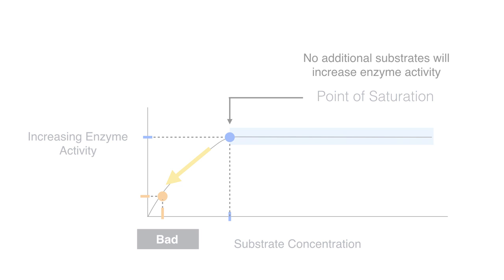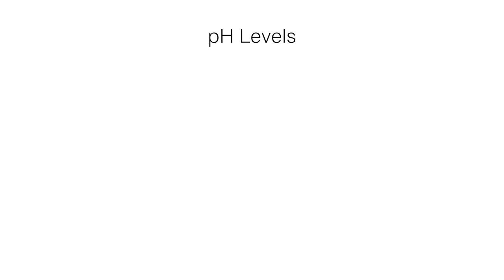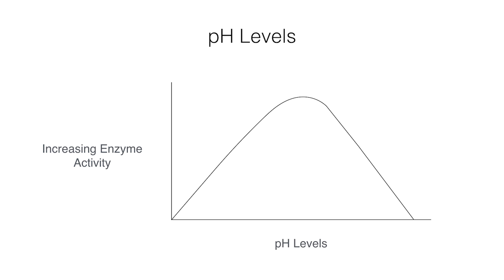Now, let's move on to our final topic, pH levels. As you can see, the pH graph is similar to the temperature graph. Good news for you is that it works the same way. Top of the graph means optimal pH level, which means optimal enzyme activity.